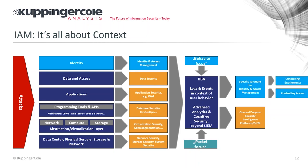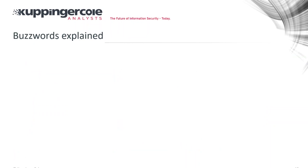We try to do things like controlling access — do we allow that access at runtime — but also optimizing entitlements, restricting access, working on the least-privilege principle, really minimizing what people can do. That's why context and behavior are critically important.